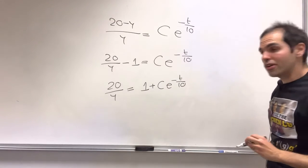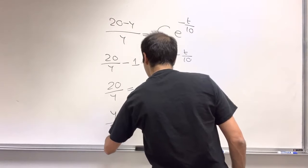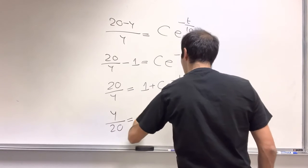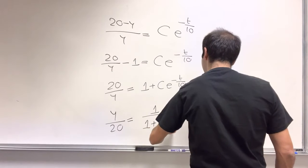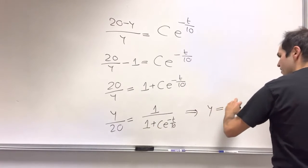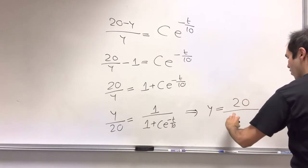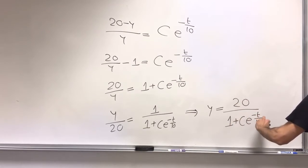And then, taking reciprocals yet again, we get y over 20 equals 1 over 1 plus c e to the minus t over 10. And finally, we get y is 20 over 1 plus c e to the minus t over 10.